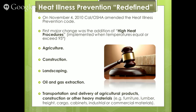In November 2010, Cal OSHA amended the heat illness prevention code. The first major change was the addition of the high heat procedures, which are to be implemented when temperatures equal or exceed 95 degrees. These only apply to agriculture, construction, landscaping, oil and gas extraction, transportation, and delivery of agricultural products, construction, or other heavy materials.